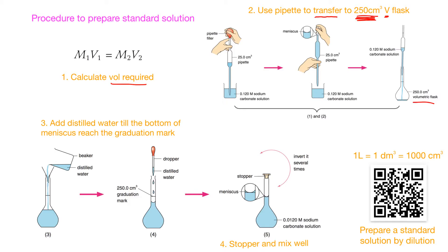After that it is easy - we just add distilled water till the bottom of the meniscus reaches the graduation mark. This is the graduation mark, and we have the bottom of the meniscus like this. Remember the curvature - the bottom of the meniscus touches the graduation mark, and that will mean the volume inside will be precisely 250 cm³.